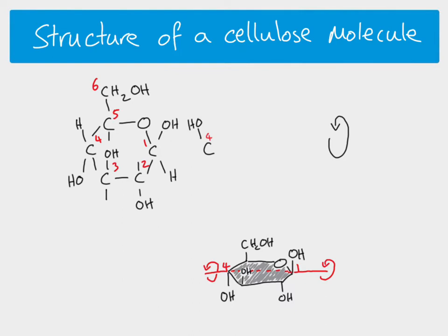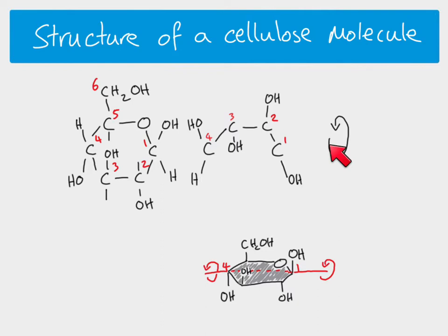On carbon three, the hydroxyl group that was above the ring is now below the ring after rotation. Basically all groups sticking above or below the ring are reversed — the ones above go below and the ones below go above. Carbon one is important because it joins to another glucose molecule. After rotation, carbon one's hydroxyl group is now below the ring, whereas before it was above.